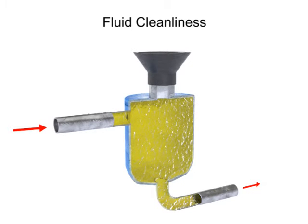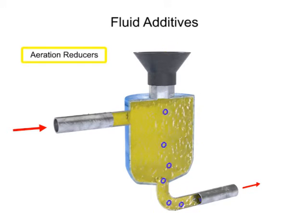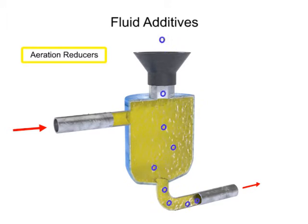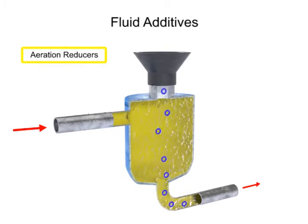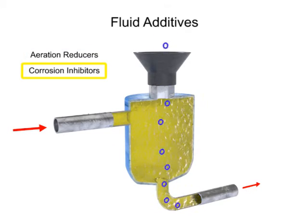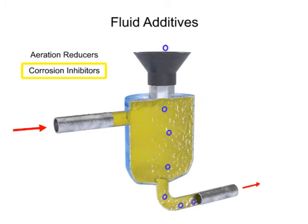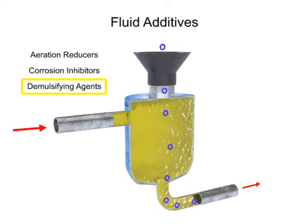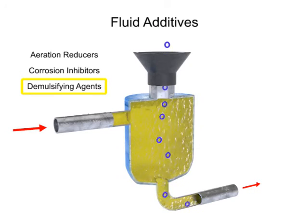Another factor common to hydraulic fluids is the use of additives. Additives can be used to reduce aeration and the production of bubbles as the fluid travels rapidly throughout the system. They can be used to administer corrosion inhibitors within the reservoir, and they can be used as a demulsifying agent, which helps the fluid resist mixing with water.